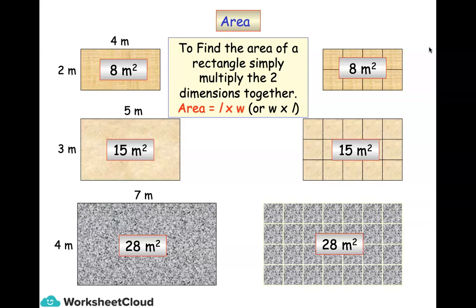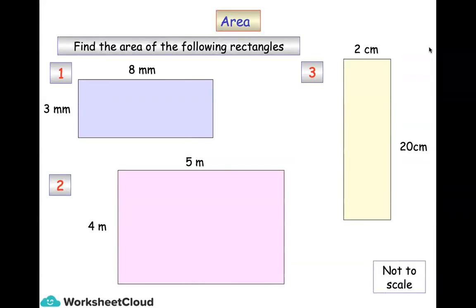So there's a little recap and conclusion: to find the area of a rectangle, simply multiply the two dimensions together — length times width, or width times length. Some people also say length times breadth or breadth times length. Here's some more practice for you — off you go, give those three rectangles a try and work out the area. Remember the unit of measurement and remember the squared sign at the end.